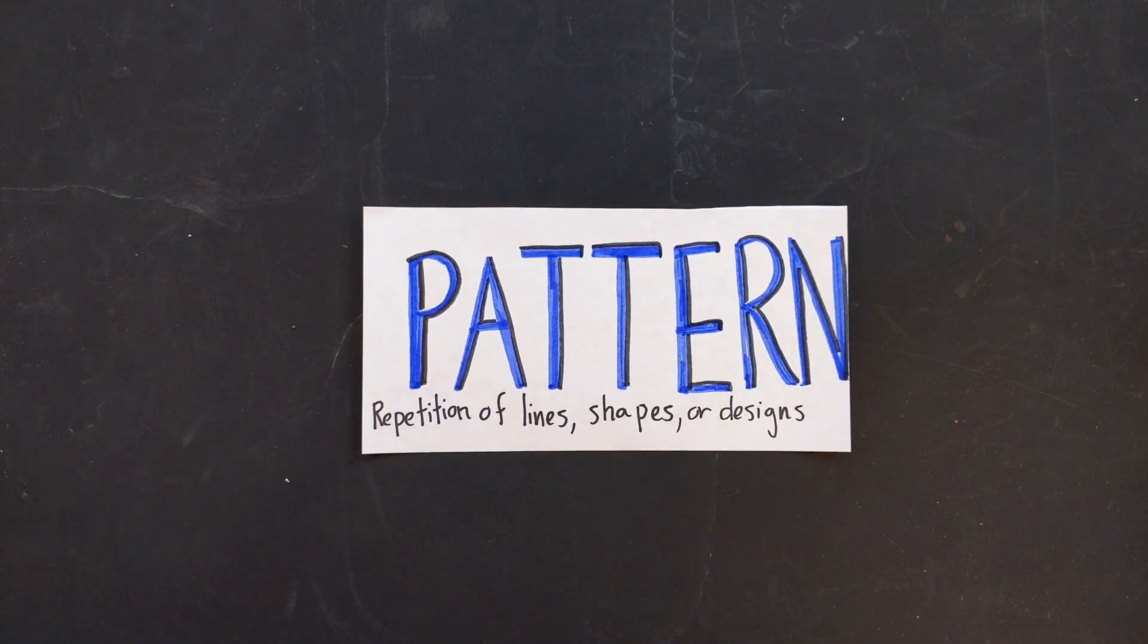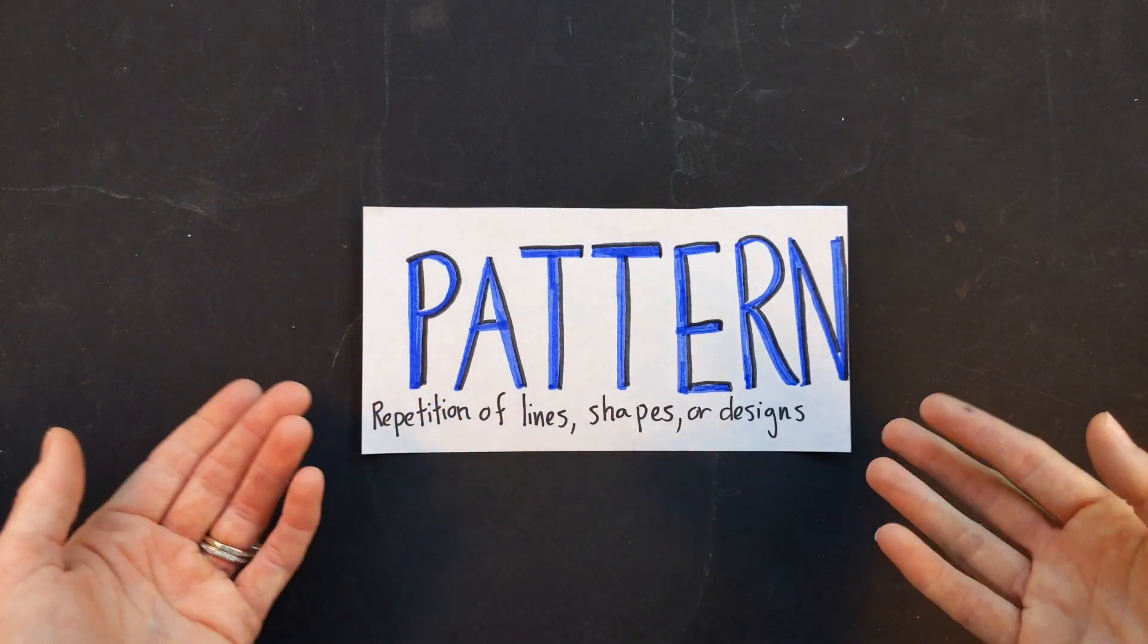Pattern can be found in a lot of different places. We see it in nature a lot. If you look at a tree, the shape of the leaf on the tree is repeated over and over again. On a flower, the petals of the flower are usually the same shape, so that would be repetition of a shape.